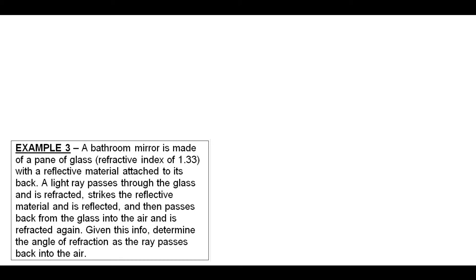Now our final example is a pretty hard one. In this case here we have a bathroom mirror that's been made of a pane of glass with a refractive index of 1.33, and to the back of that pane of glass we've attached a reflective silver-coloured material of some kind. So when light rays pass through the glass they're refracted, they hit the reflective mirror that's attached to the back, they bounce off that, pass back through the glass, and back into the air. So what we want to do here is determine the angle of refraction as that ray passes back into the air after leaving the mirror.